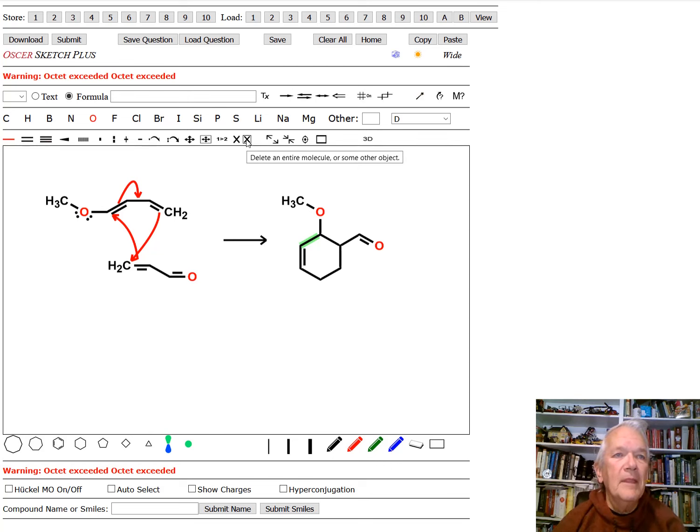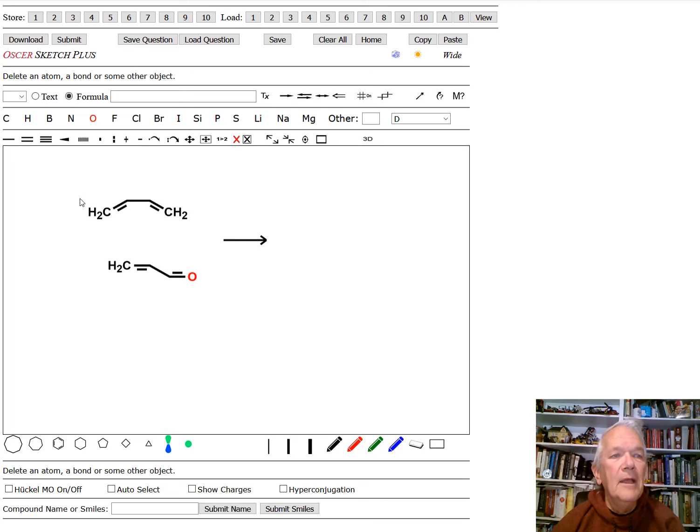Now, we have another possibility we have to worry about. Let me go in again and erase these arrows. Is that I put that methoxy on the end carbon, but I didn't have to put it on the end carbon. There's butadiene, there's ends and there's middles. What if I put it in the middle? So now let me put it on here.